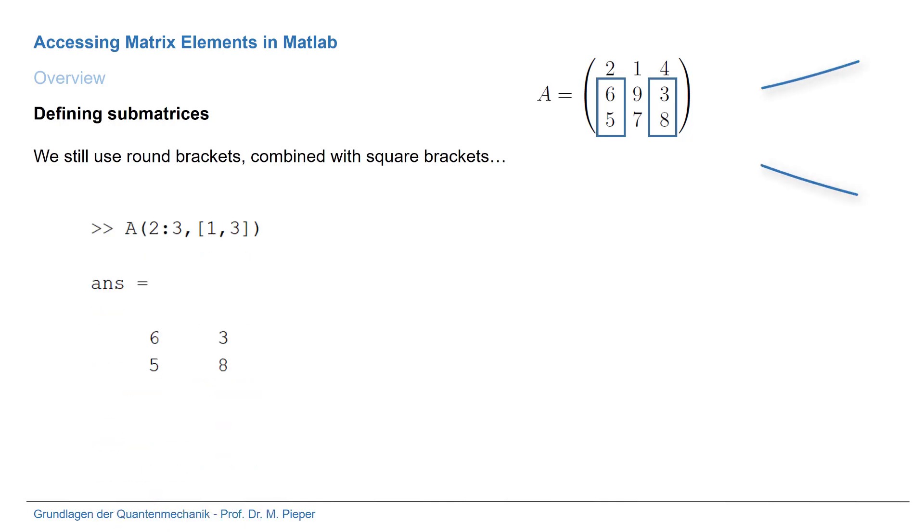We are interested in rows 2 and 3, so we can write in the first index 2:3 as before, and now we want columns 1 and 3. If we would write 1:3, so from 1 to 3, we also would take column 2 and that's what we do not want. So that's why we define a vector, and that's because we use these square brackets in the second index. Here we define a vector which contains the indices which we want to take. So in this case 1 and 3 for the first and third column.